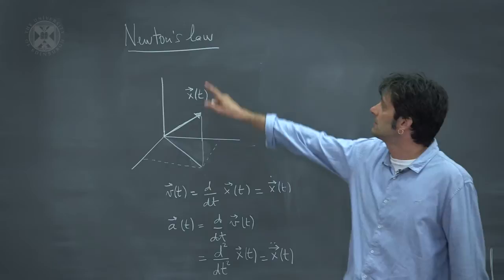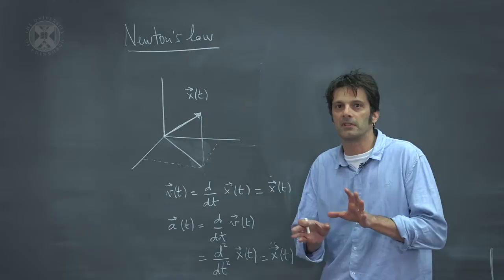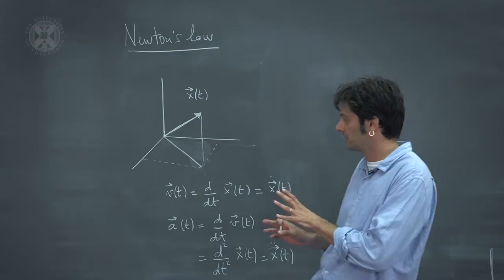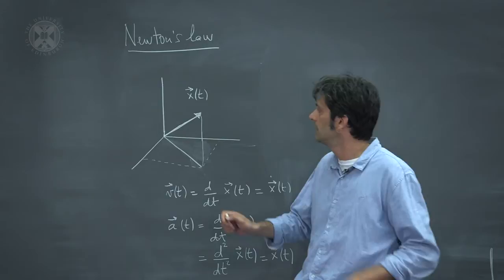Today we are going to discuss classical mechanics. Newton's law describes the motion of macroscopic objects. Before we get into the details of Newton's law and all the technical bits, let us pause and focus on how we actually describe a macroscopic object. In our simplified world, a macroscopic object will be identified with a point-like particle, which is described by its position in space.